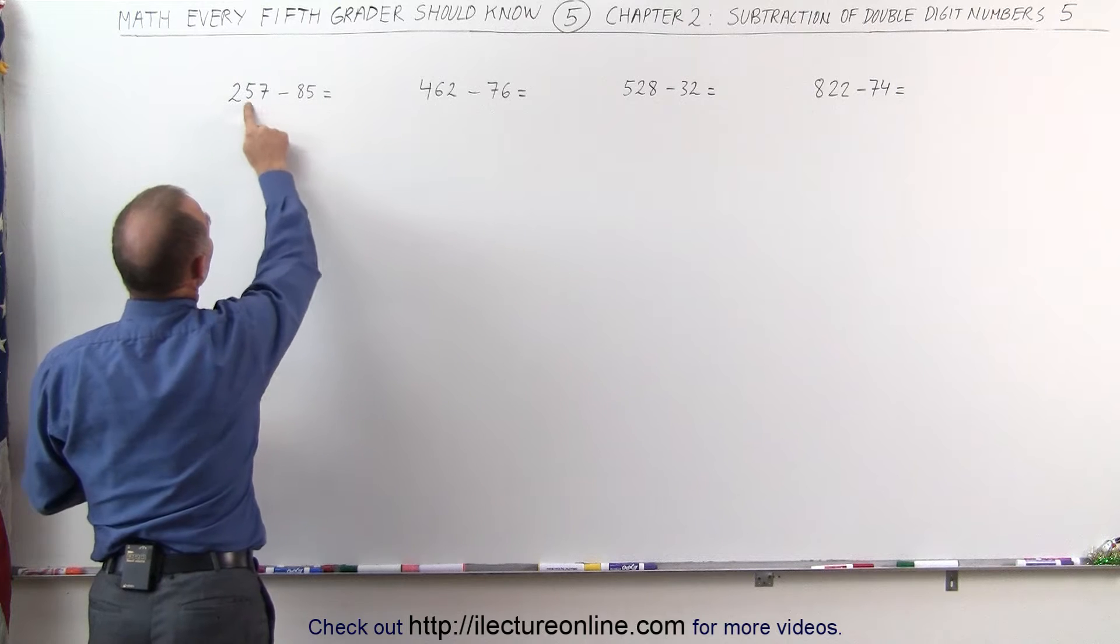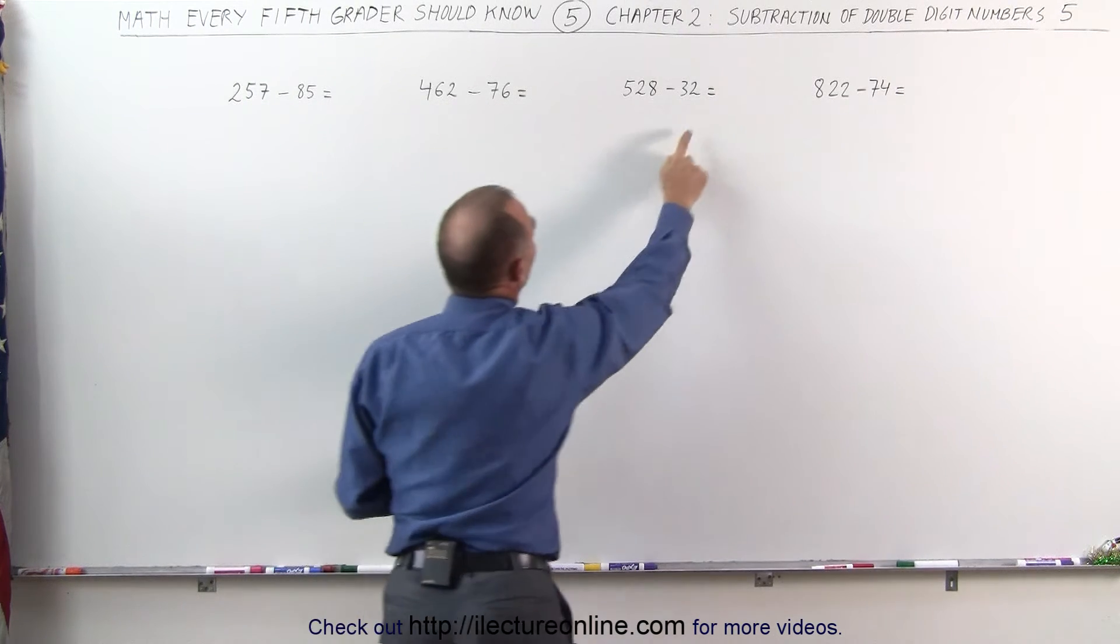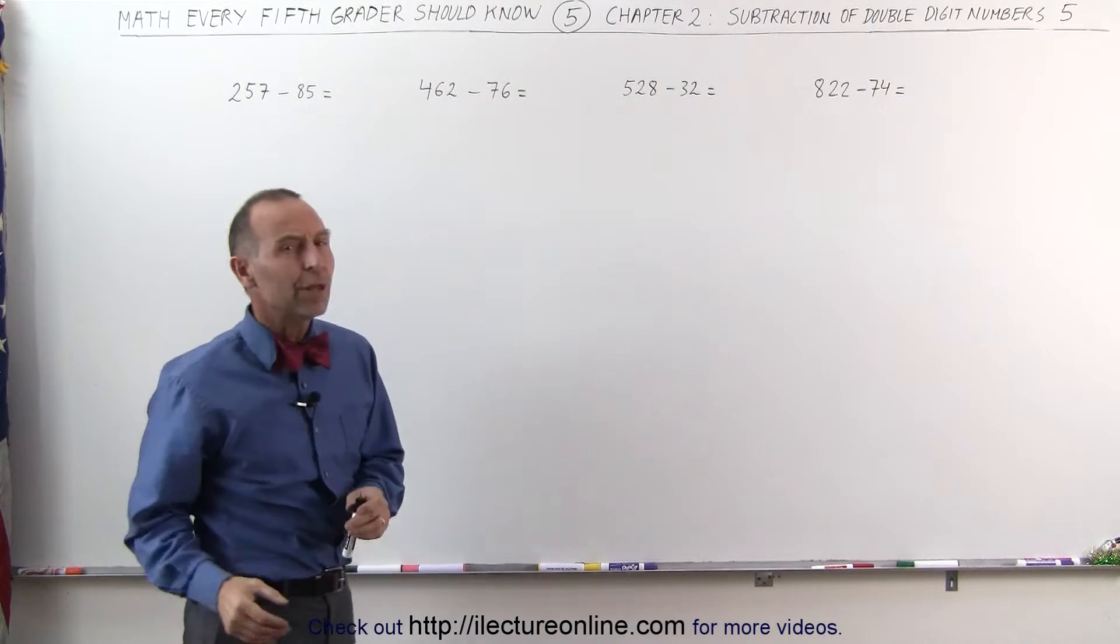Notice that 85 is bigger than 57, 76 is bigger than 62, 32 is bigger than 28, and 74 is bigger than 22. So how do we do that?